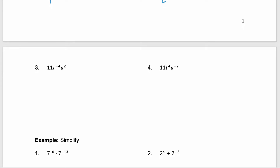Now let's throw in some more variables and even some constants. Whenever I see that I have a negative exponent involved, I assume I'm going to end up with some sort of fraction, so I draw my fraction bar. Then I like to take it piece by piece. 11, the constant, doesn't have an exponent associated with it, so it's not going to change positions — it stays as 11 in the numerator. Next, t to the negative 4: the negative is going to push the t into the denominator with a positive exponent. And then u squared, not negative, so that stays in the numerator. We have 11u squared over t to the 4th.